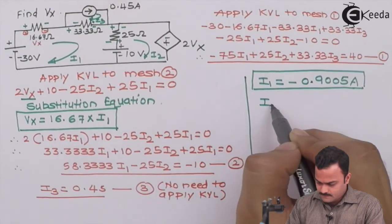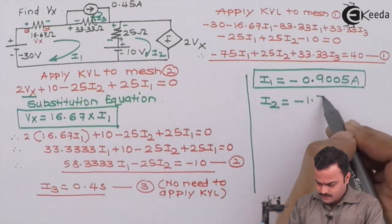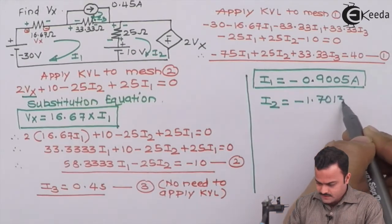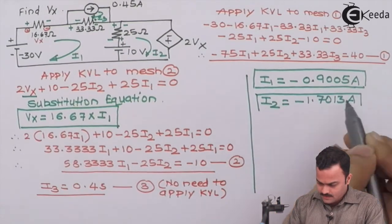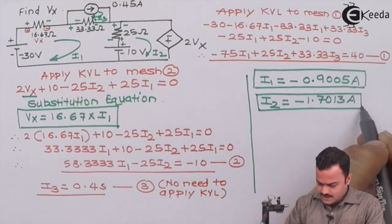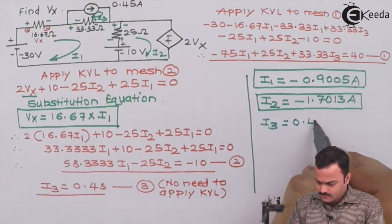i2 as minus 1.7013 ampere, and needless to say i3 has to be 0.45 ampere only.